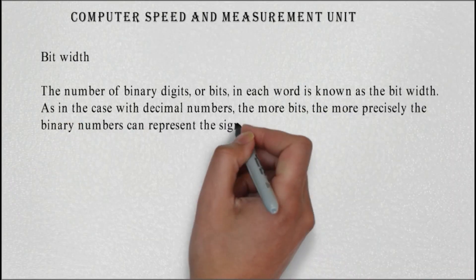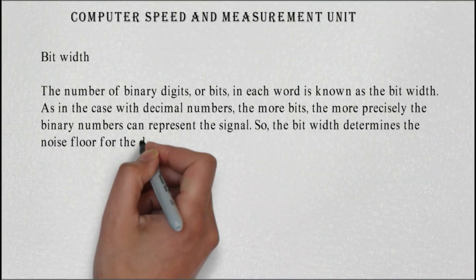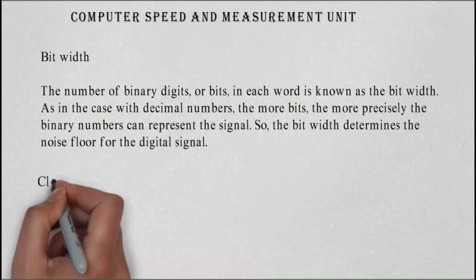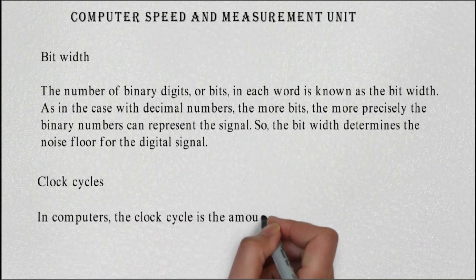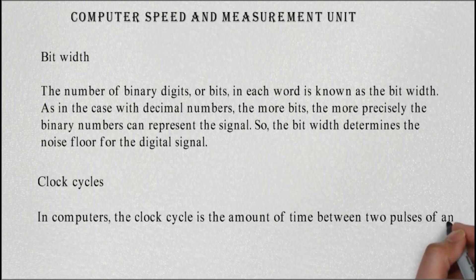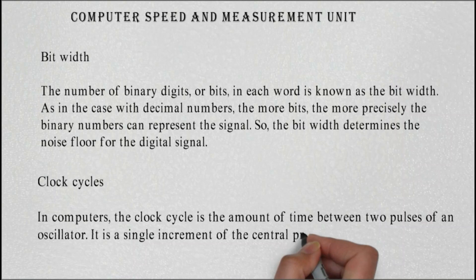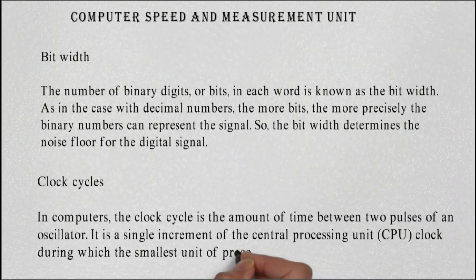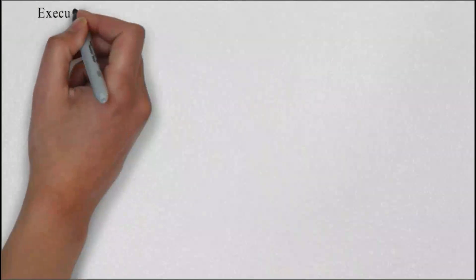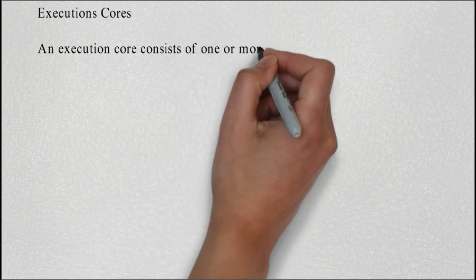So the bit width determines the noise floor for the digital signal. Clock cycles: in computers, the clock cycle is the amount of time between two pulses of an oscillator. It is a single increment of the central processing unit (CPU) clock during which the smallest unit of processor activity is carried out.